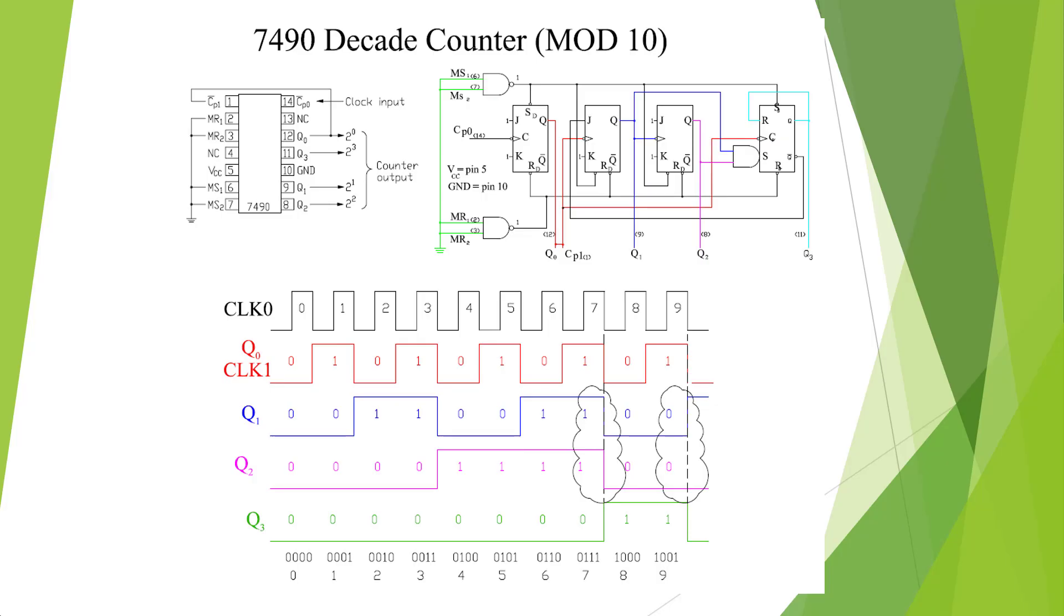This is a 7490 decade counter connected as a mod 10, a divide by 10. BCD counter counts 0 to 9. And we put the clock into the divide by 2 section, CP0. We tie the output, Q, to the clock of the divide by 5, CP1. And now we have a divide by 10. Notice most master sets and master resets are tied low to allow it to operate. And we will get the output from the Q0, Q1, Q2, and Q3. It's a count 0 to 9, and it resets internally to 9.